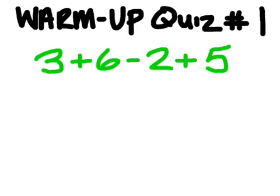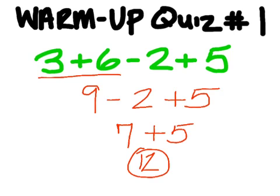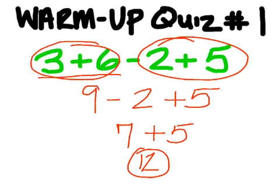Problem number 1. For the solution, 3 plus 6 is 9, and then minus 2 plus 5. 9 minus 2 is 7, plus 5 is 12. Do not do this — don't do 2 plus 5 before you do everything else. That's going to give you the wrong answer. That's why some of you had 9 minus 7 to get 2. That's not the right answer.